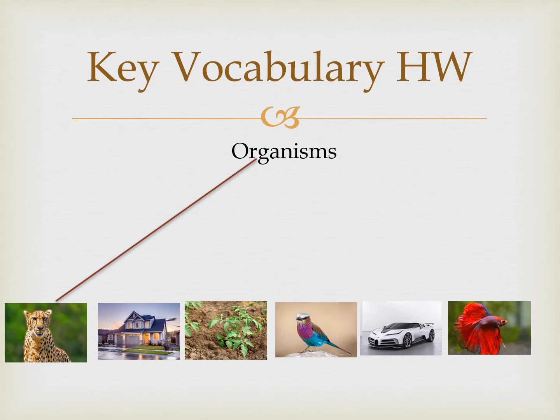The first question was organisms. You had to draw a line to the corresponding pictures — whichever picture was an organism. The first one had been done already. An organism is an animal, plant or single cell life form, i.e. bacteria. But that's a bit too complex. All you need to know right now is animal or plant.